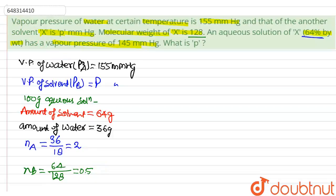By the number of moles, we can calculate the mole fraction of water and solvent. XA equals the number of moles of water, which is 2, divided by the total moles: 2 plus 0.5. By solving, we get 0.8.